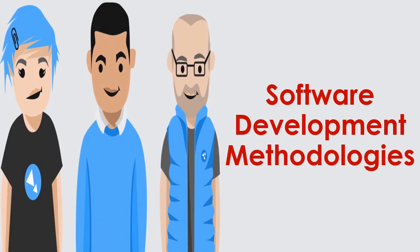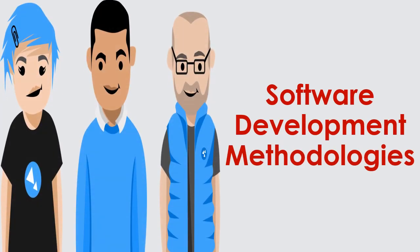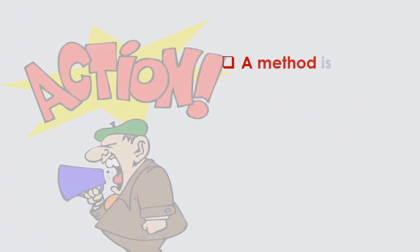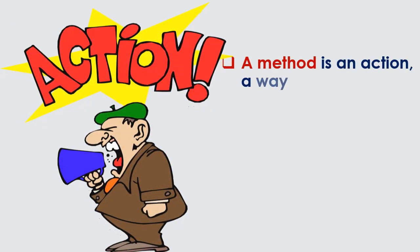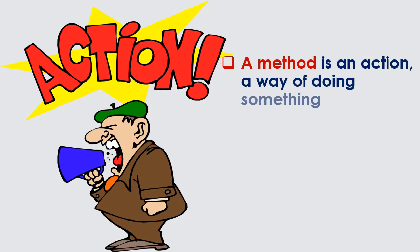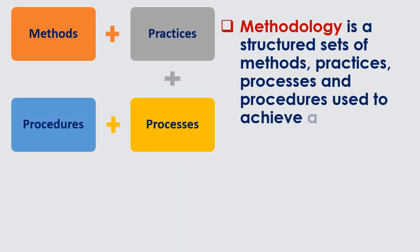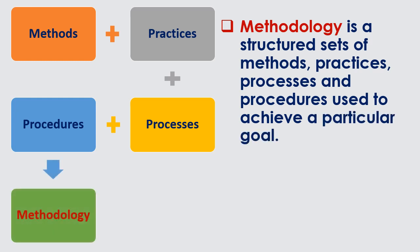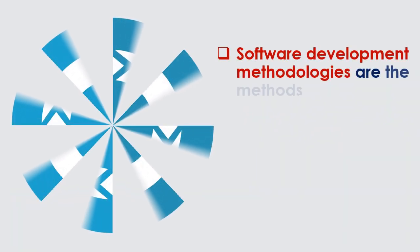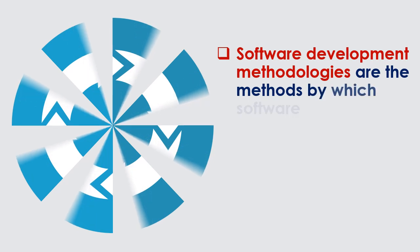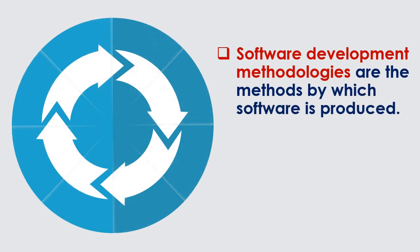Software Development Methodologies. A method is an action, a way of doing something. Methodology is a structured set of methods, practices, processes, and procedures used to achieve a particular goal. Software Development Methodologies are the methods by which software is produced.